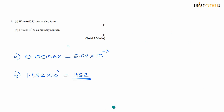Question number 8 is very simple for two marks. Write 0.00562 in standard form. The first number in standard form must be between 1 and 10, so the decimal point jumps three places to give 5.62 times 10 to the power of minus 3. The next part asks you to make a number in standard form into an ordinary number: 10 to the power 3 is 1000, meaning 3 jumps to the right, giving the answer 1452.